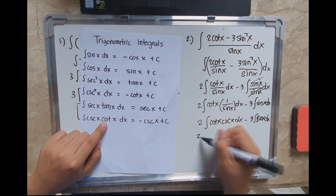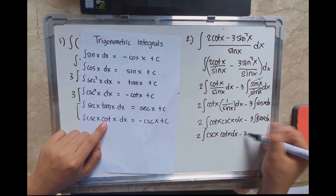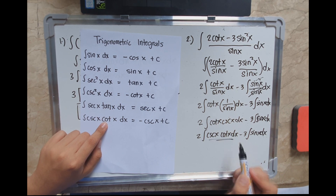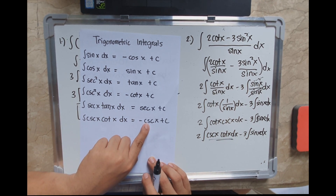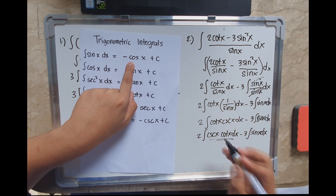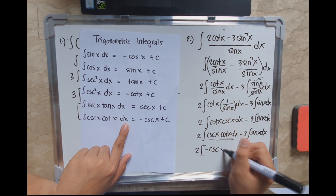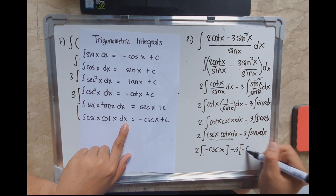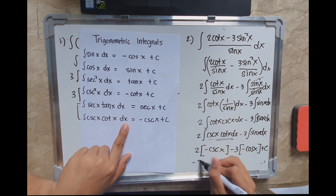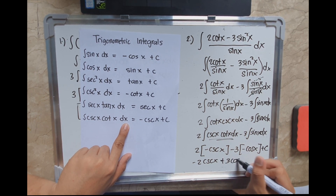Rewriting, we have 2 times the integral of csc(x)cot(x) dx minus 3 times the integral of sin(x) dx. The integral of csc(x)cot(x) dx equals negative csc(x), and the integral of sin(x) dx equals negative cos(x). So we have 2·(negative csc(x)) minus 3·(negative cos(x)) plus C, giving the final answer: negative 2csc(x) plus 3cos(x) plus C.